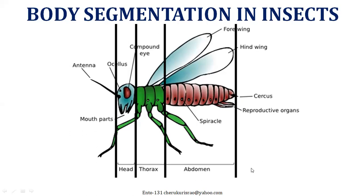As far as the second part is concerned — the thoracic region — it will have legs and wings. There are three pairs of legs, one pair on each thoracic segment, and two pairs of wings located on the second and third thoracic segments. Since the thoracic segments have wings useful for flying and legs useful for movement or locomotion, the thoracic region is called the locomotory center.